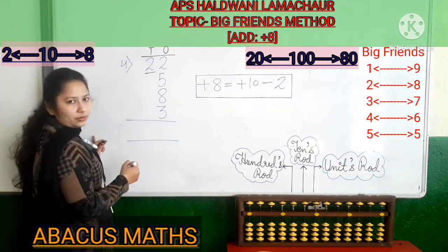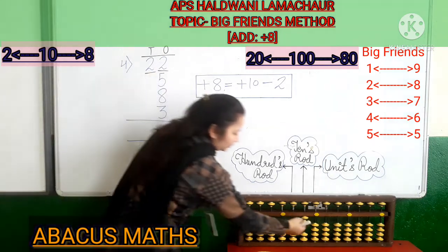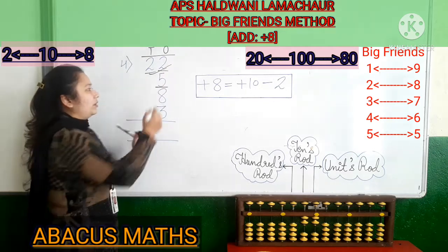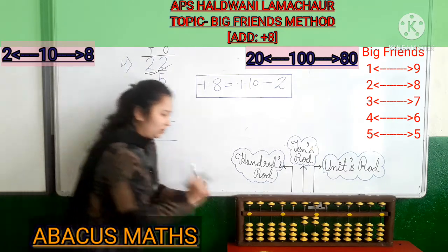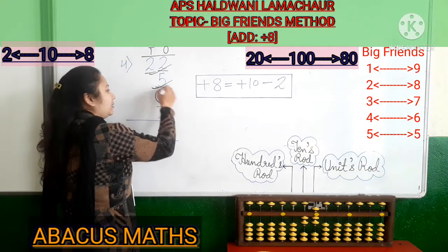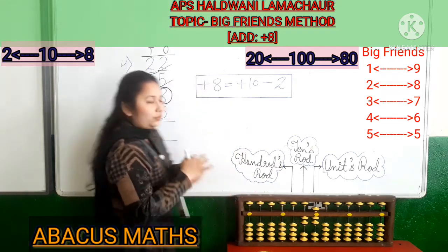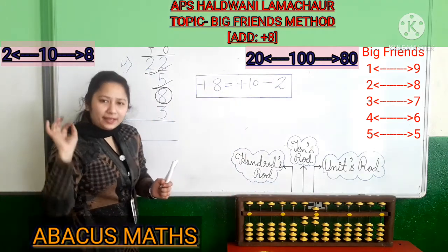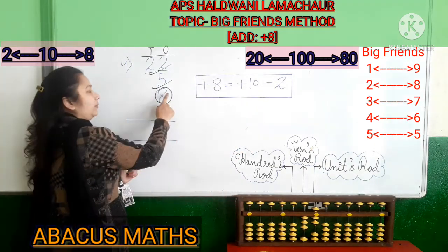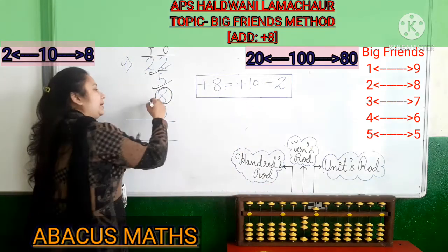First of all, add 2 in the tens slot: 1, 2. Then add 2 in the tens slot again: 1, 2. We have added 22. Next, add 5 in the ones slot: 5. Now we have to add 8 in the ones slot, but only two beads are there, so we use the big friends formula. For adding 8, first add 10 in the 10s slot up. Then minus 2 from the same ones slot. And your 8 is added.